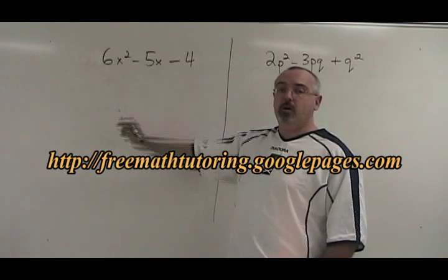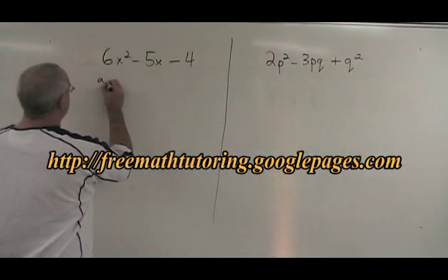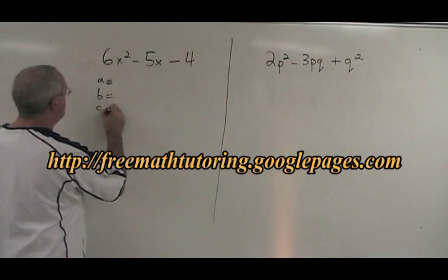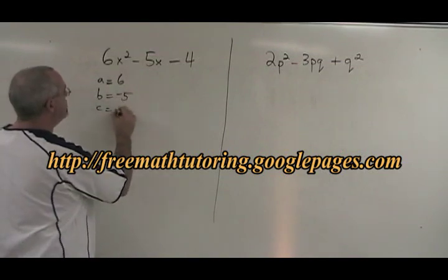We start off the same though, we identify our a, b, and c. In this case, a is 6, b is negative 5, and c is negative 4.